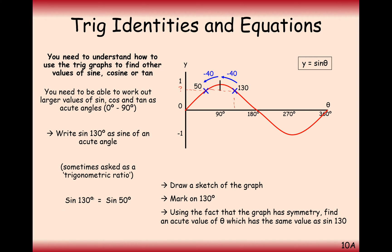Here what we can say is that sine of 130 is equal to sine of 50 and this technique is going to come in really useful for when we solve trigonometric equations.